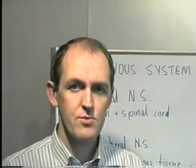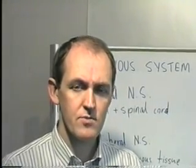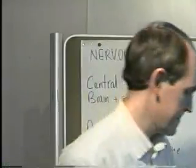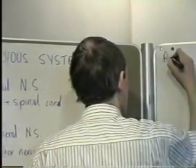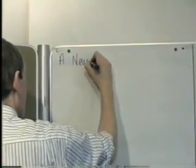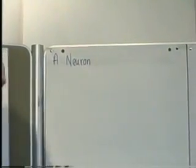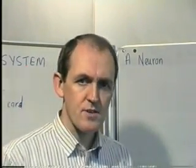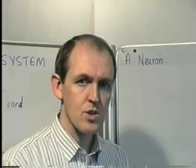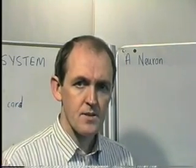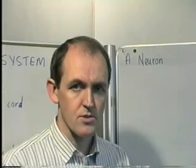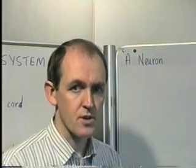Now the normal way to start learning about the nervous system is to learn about individual nerve cells. Individual nerve cells are referred to as neurons. So what we're going to do now is we're going to draw a picture of a neuron. The one we're going to look at first is a nerve cell which carries messages from the central nervous system out to the peripheral nervous system. These neurons transmit messages for movement, therefore they're called motor neurons.